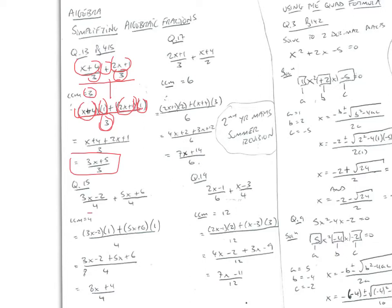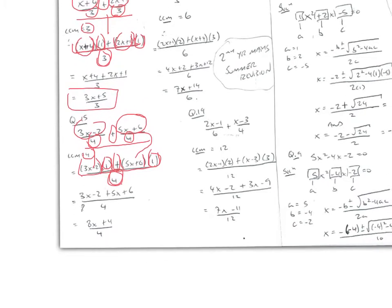Next: (3x-2)/4 + (5x+6)/4. The lowest common multiple of 4 and 4 is 4. We draw our line, 4 underneath, two sets of brackets with a plus sign. We write 3x-2 in the first bracket and 5x+6 in the second. 4 goes into 4 one time each. Multiplying out gives 3x-2+5x+6 all over 4, and collecting like terms gives (8x+4)/4.